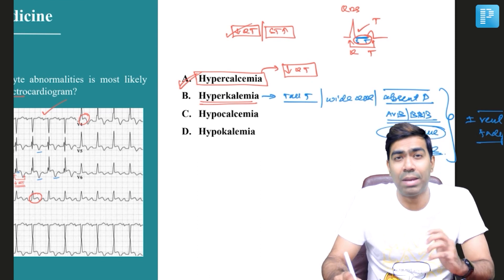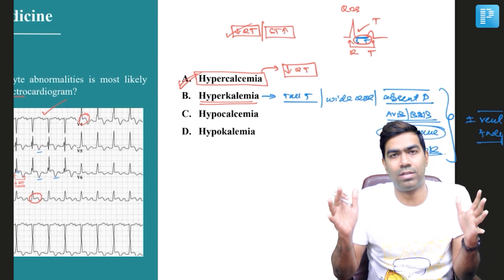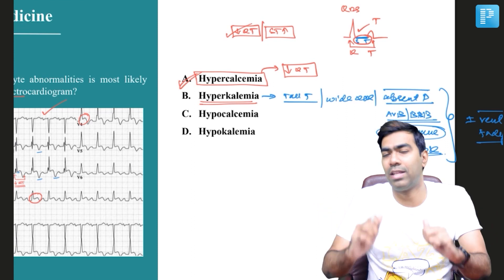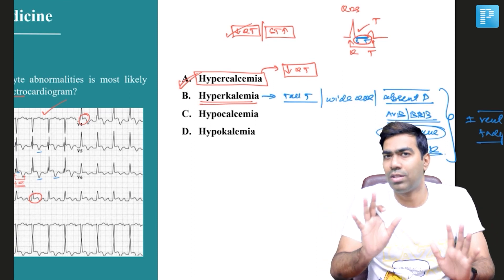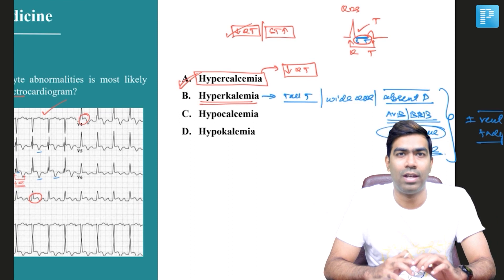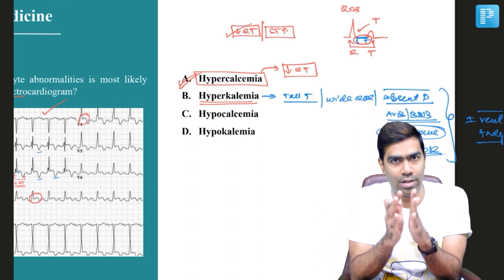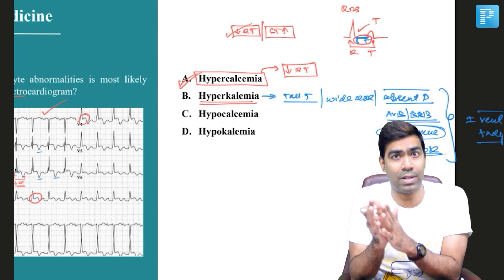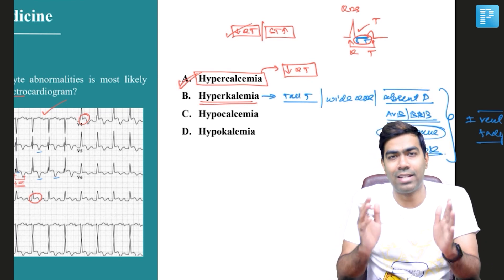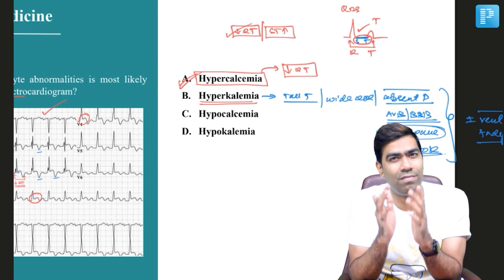In hypocalcemia, your ST segment will be lengthened, and because of that the QT interval will appear lengthened. But the T wave duration will not be altered that much in calcium-related problems. In hypercalcemia, the ST segment will be short. In severe hypercalcemia, the ST segment will be literally non-existent, and that is the reason why your QT also tends to appear very, very short.